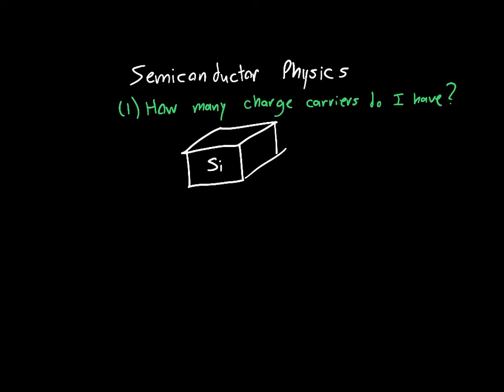We want to know within this block, how many charge carriers, so electrons are an example of a charge carrier, how many of these do I have available to conduct current? So if I just had a metal, we know that the number of electrons available to conduct current in the metal is roughly equal to the number of atoms.